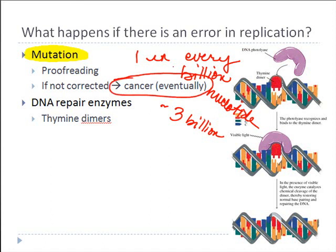Fortunately, when an error is detected during the proofreading process, the cell has different enzymes which can repair the particular mismatch. These are endonucleases, and their job is to cut out or excise the error in the sequence, and then to allow DNA polymerase to go in and recopy the correct sequence.